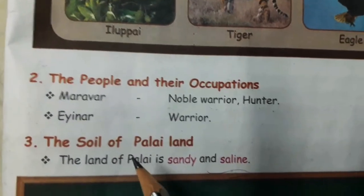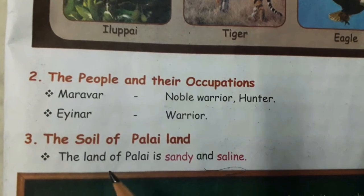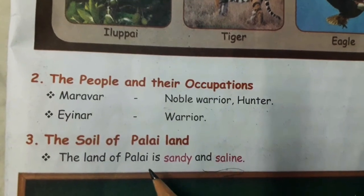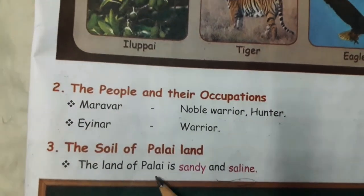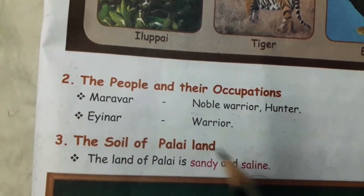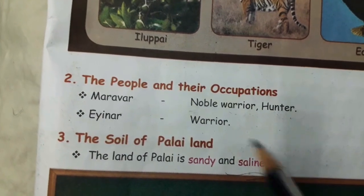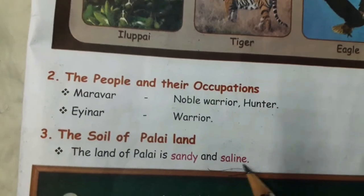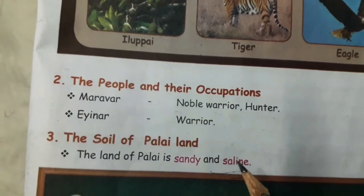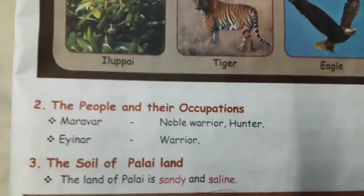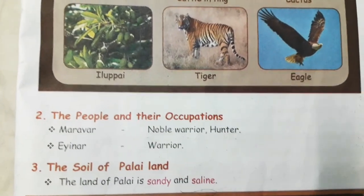Finally, we will see the Palai land soil. The land of Palai is sandy and saline — that land is full of sandy and saline soil. Saline means salty, so the land is full of salty sand. That's all about today's class, students. Thank you.